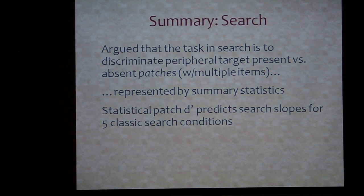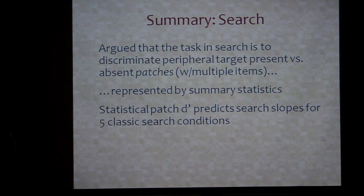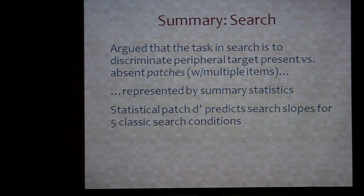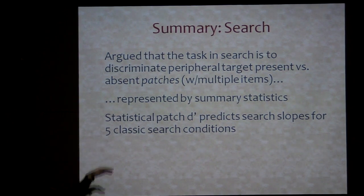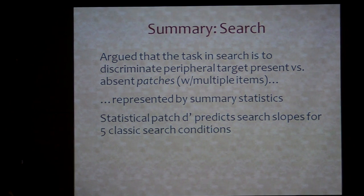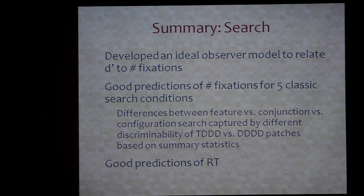So we're arguing that one of the key important things here is that you have to think about search — the task for the visual system — as being to discriminate between patches with multiple items in them. Those patches are represented by summary statistics. This mongrel discriminability is predictive of how well people do on search for these five classic conditions. We're currently running about another 25 conditions. Furthermore, you can take this same sort of idea, develop an ideal observer model, and actually make quantitative predictions for the first time on these kinds of displays of number of fixations and reaction time in order to find the target.